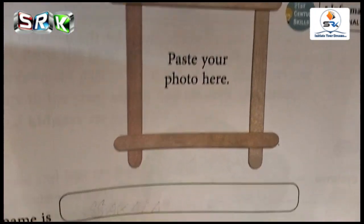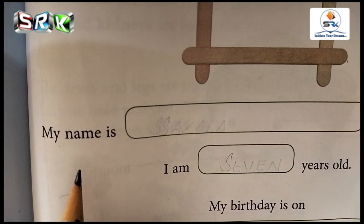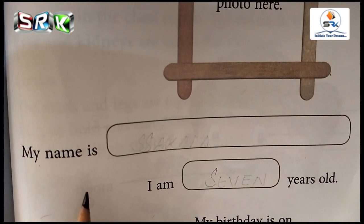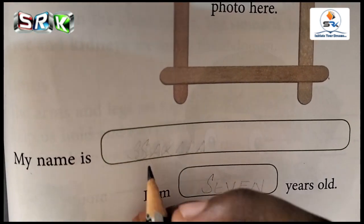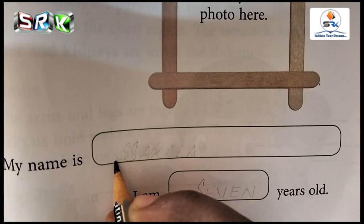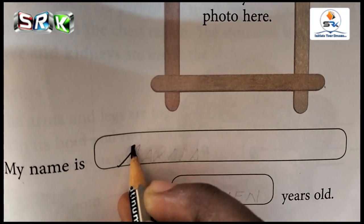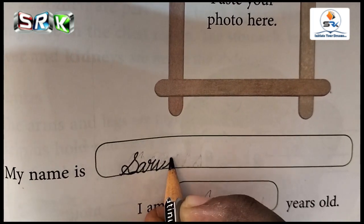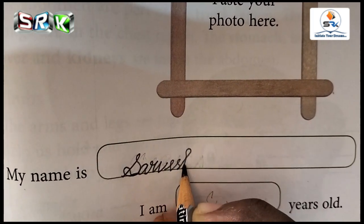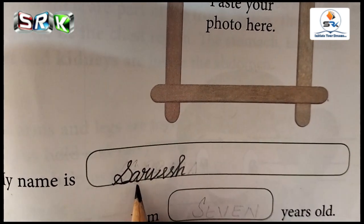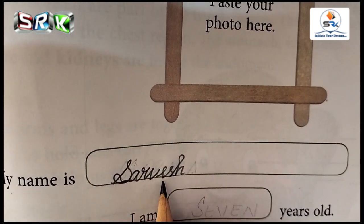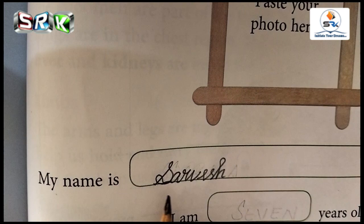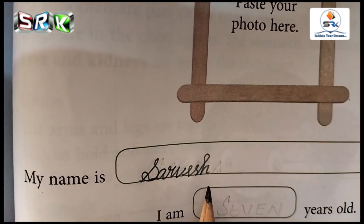The first field is 'My name is.' So write your name. I am writing only as an example — you write your own name. For example: Sarvesh. Write neatly with a cursive first letter: S-A-R-V-E-S-H. Say with me: My name is Sarvesh.